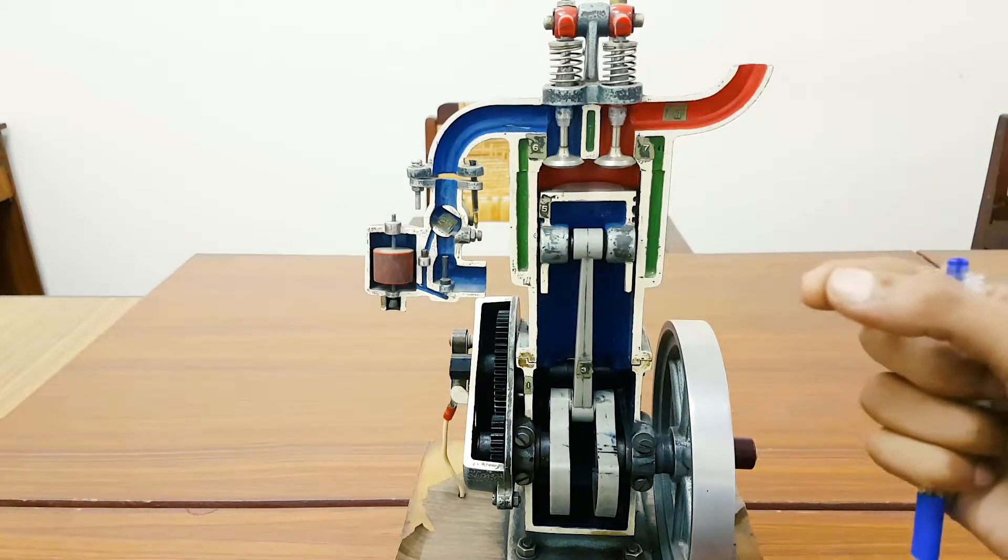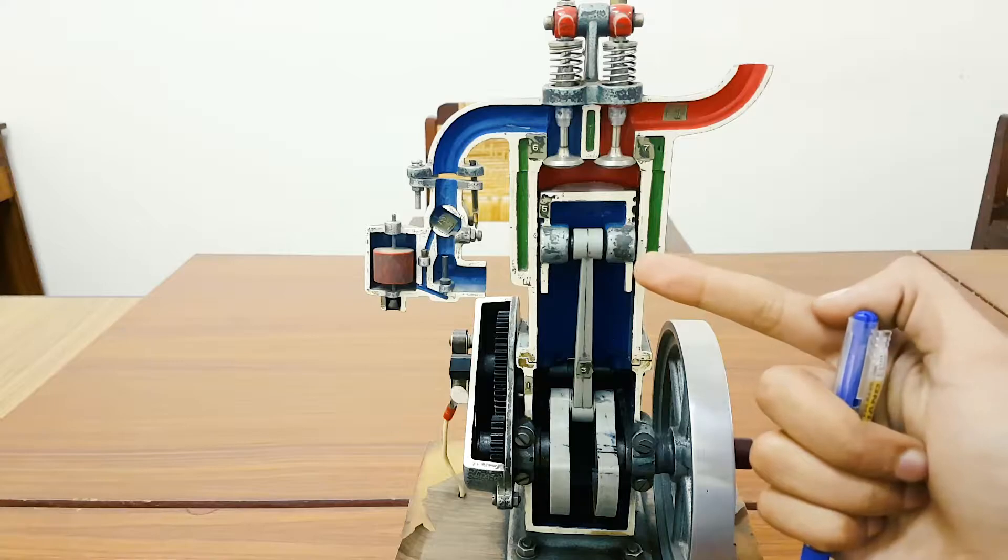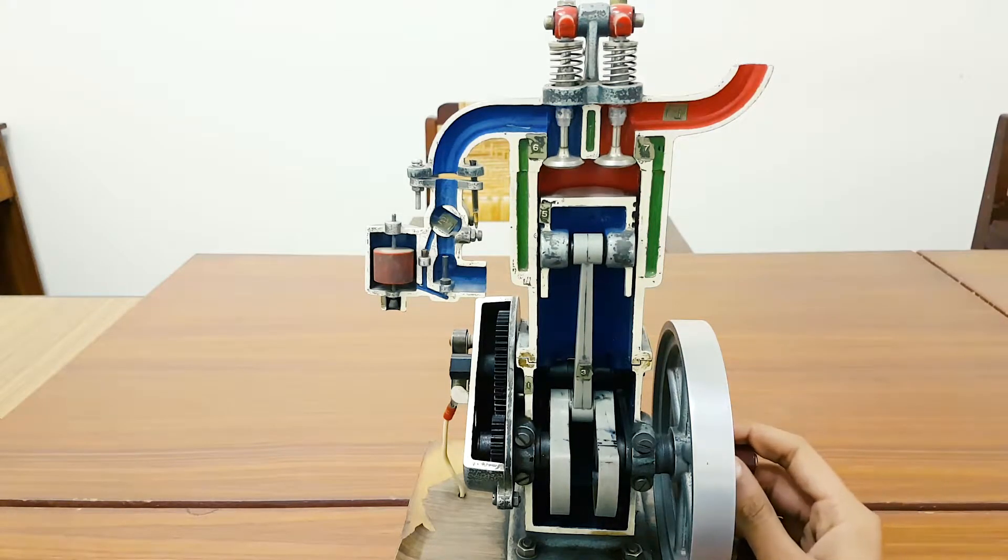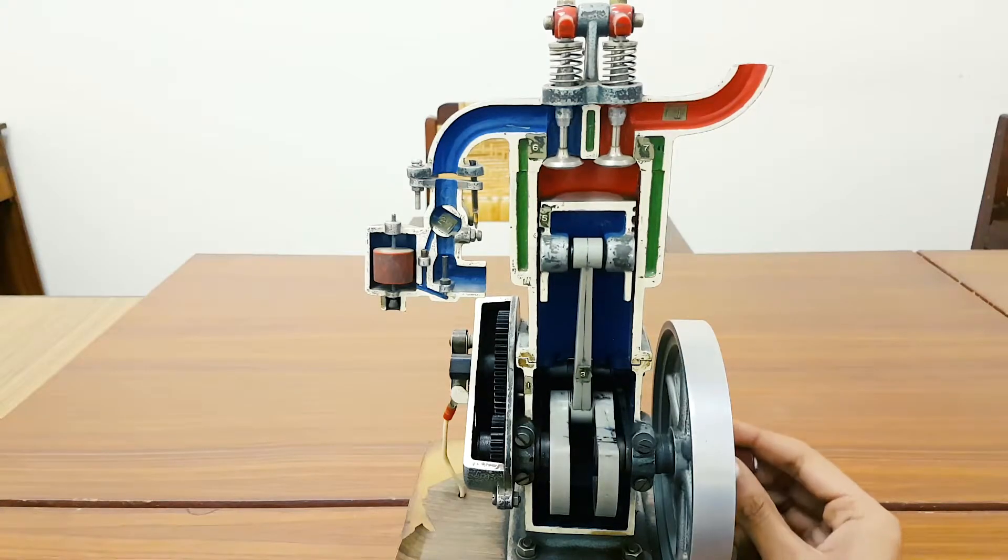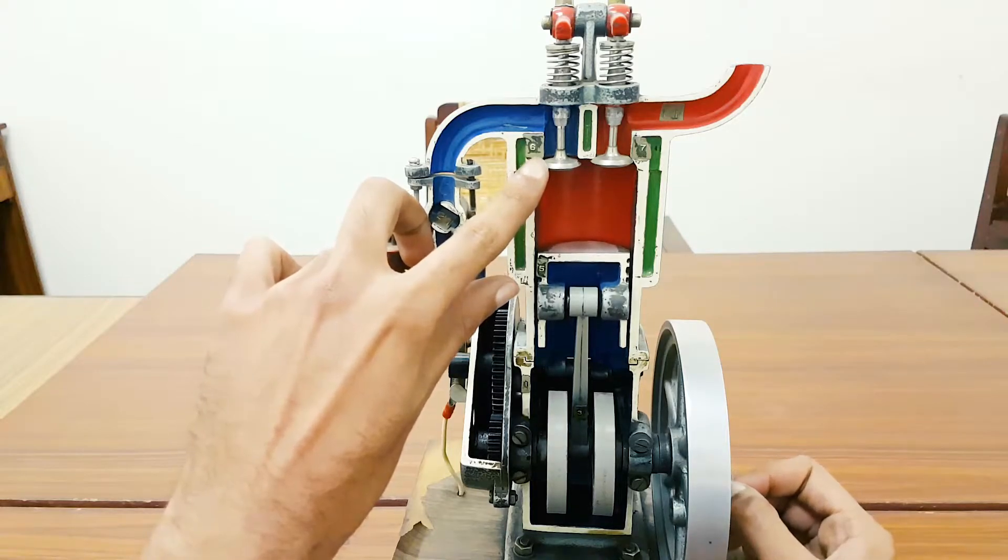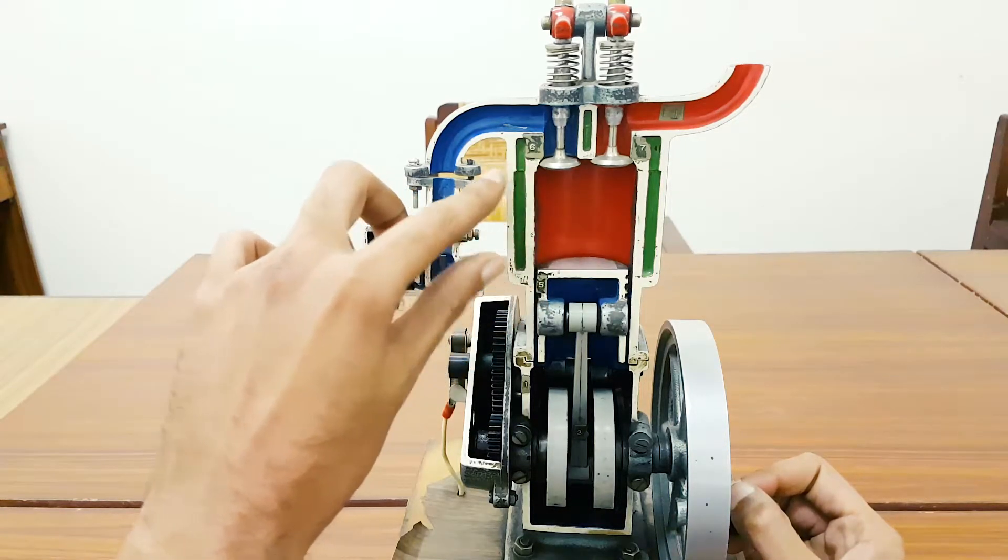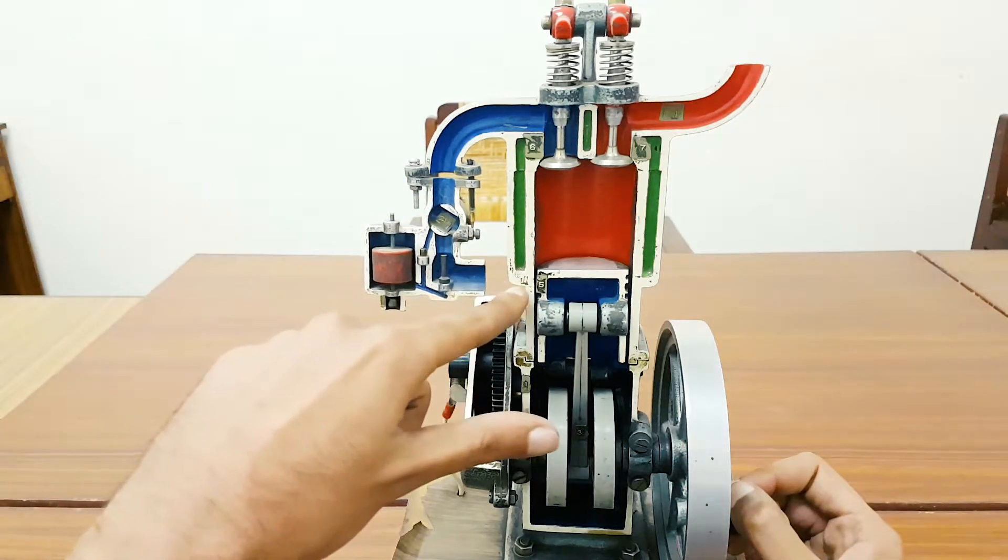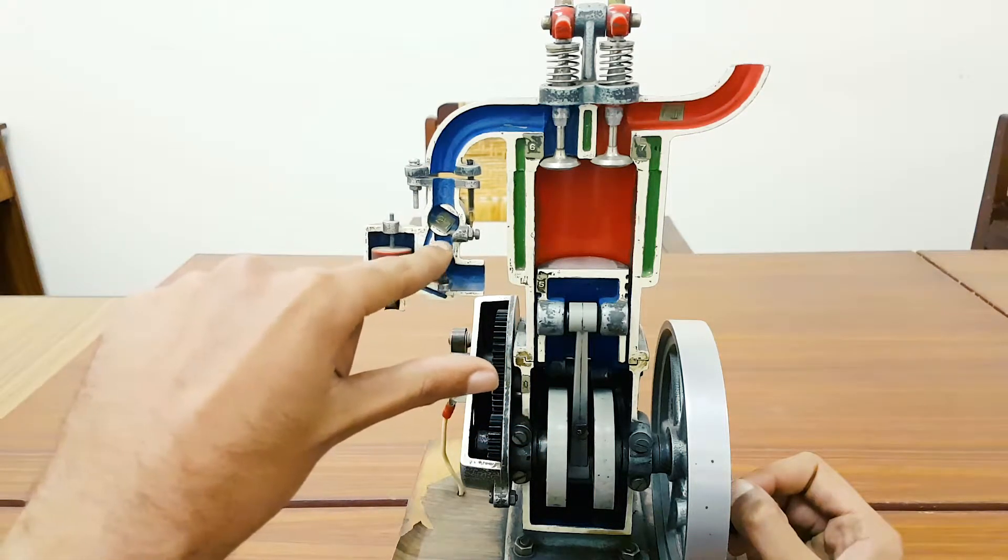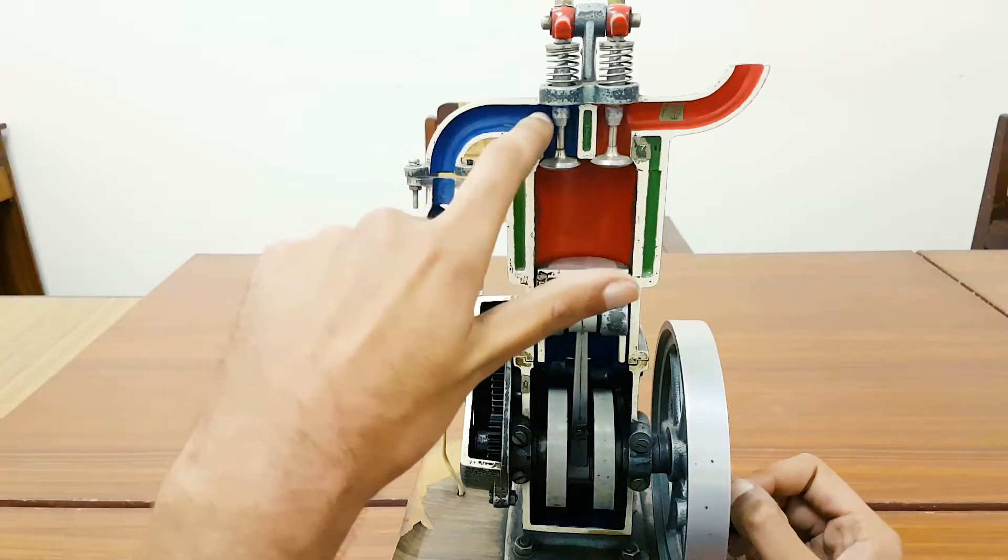First, when your engine moves in the first stroke, the piston is moving down and your intake valve opens. When it opens, you see air entering inside the engine from the carburetor. Here the fuel mixes up, makes air-fuel mixture, and flows to the engine cylinder.